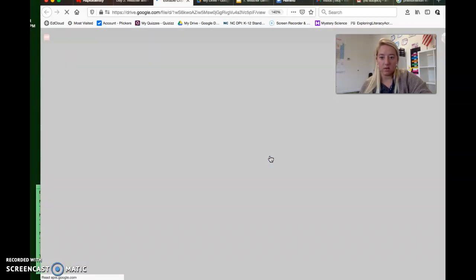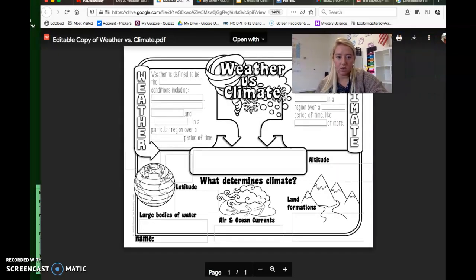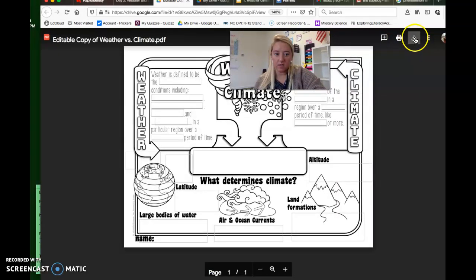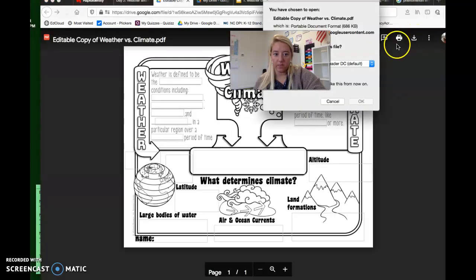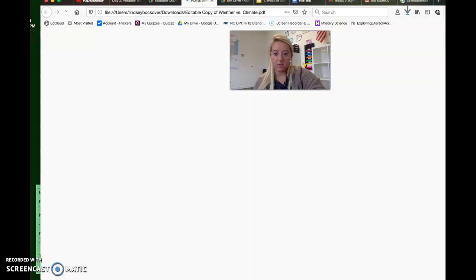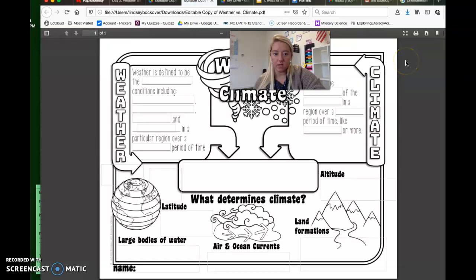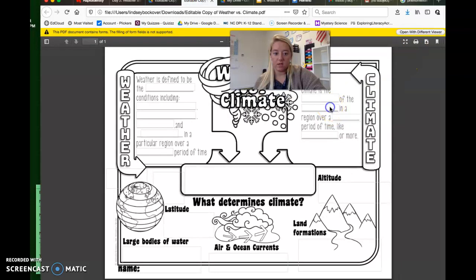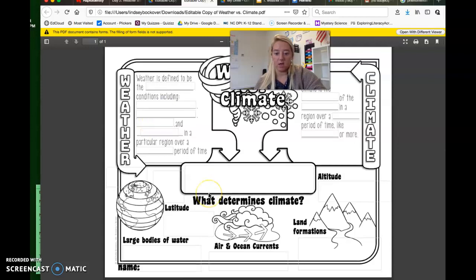You're going to open the following document on your computer. You're actually gonna have to download this because it was once a Google Doc. Click this download button right here, and you're gonna go one step further. Instead of leaving it like this, you're going to put it into a different viewer. There will be some dots over here. You'll click the dots and it says view on computer, and then you'll actually be able to put the information into the little boxes like you should.